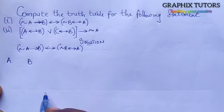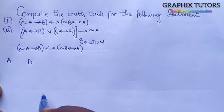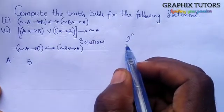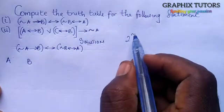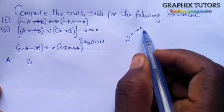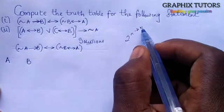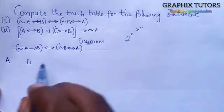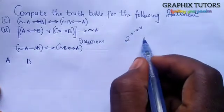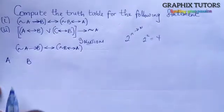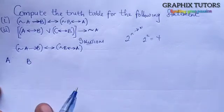Now ask yourself: how many rows and how many columns? For rows, there's a formula: two to the power of N gives the number of rows, where N is the number of propositional variables. We have two variables, so two to the power of two equals four rows.